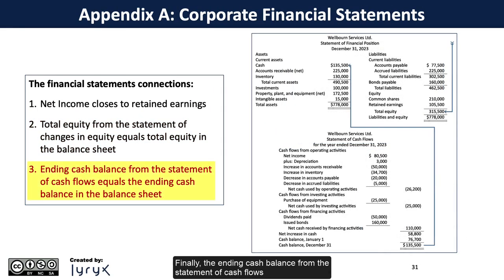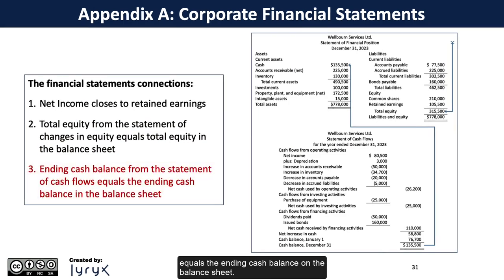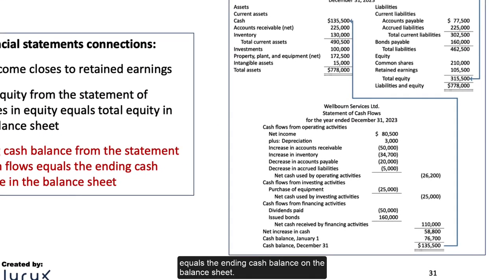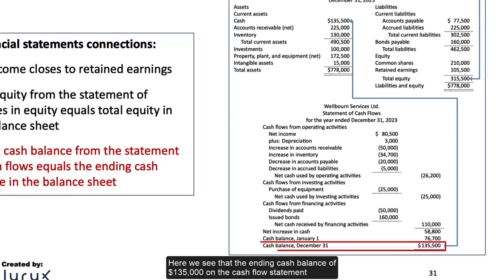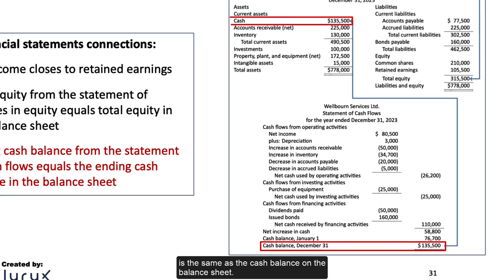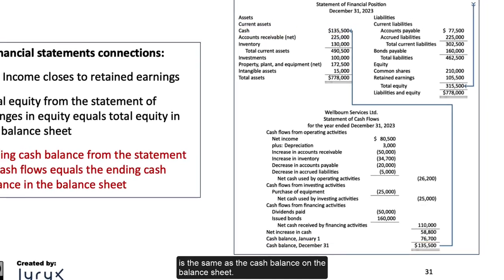Finally, the ending cash balance from the statement of cash flows equals the ending cash balance on the balance sheet. Here we see that the ending cash balance of $135,000 on the cash flow statement is the same as the cash balance on the balance sheet.